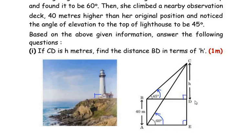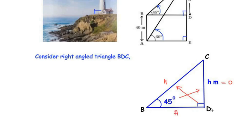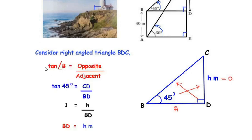Let us consider the small right-angled triangle BDC, where angle B is given as 45 degrees and the height of CD is h meters. To solve this we use a trigonometric ratio. Since the angle is given at point B, the side opposite to 45 degrees is CD, which is h meters — this is the opposite side. The side opposite to 90 degrees is always the hypotenuse, and the remaining side defaults to the adjacent side. Since we need to find BD in terms of CD, we need the opposite and adjacent sides — we do not need the hypotenuse.